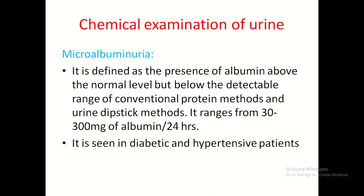Microalbuminuria means a very minute amount of albumin present in urine. It is defined as the presence of albumin above the normal level but below the detectable range of conventional protein methods such as heat and acetic acid test, reagent strips, and sulfosalicylic acid test. It ranges from 30–300 mg of albumin per 24 hours. Causes of microalbuminuria include diabetes and hypertension.